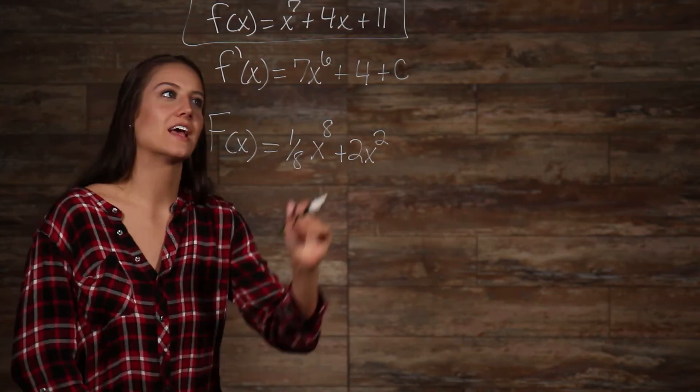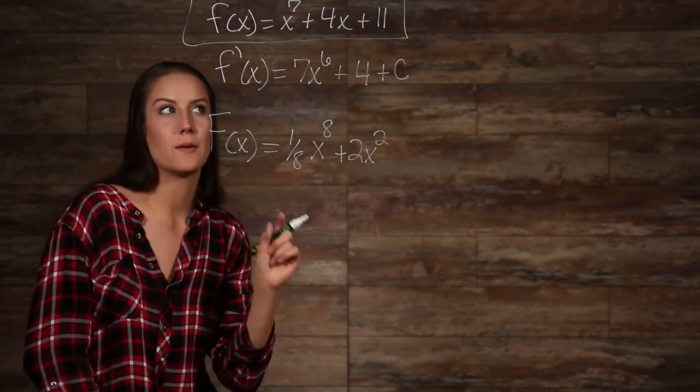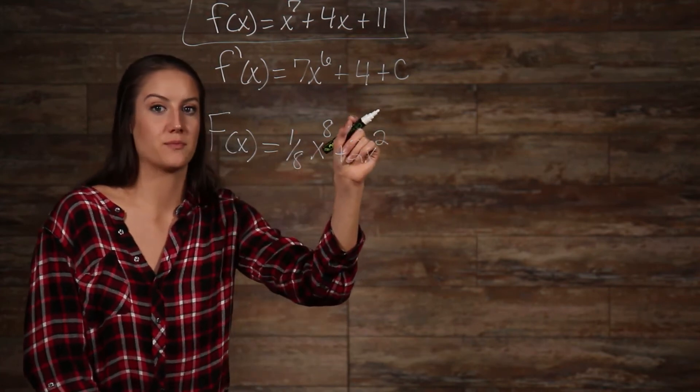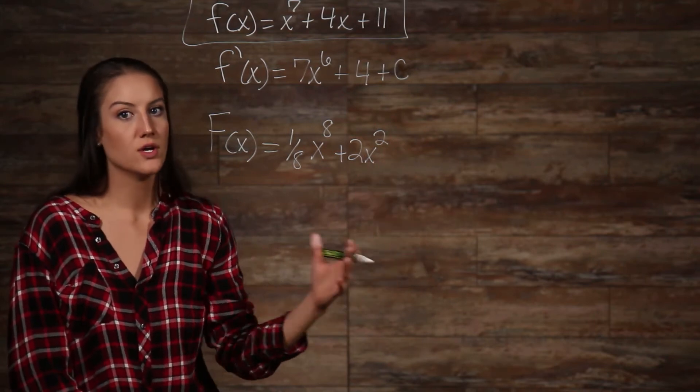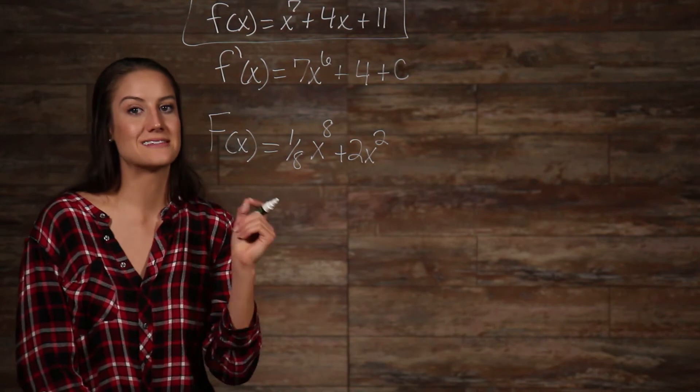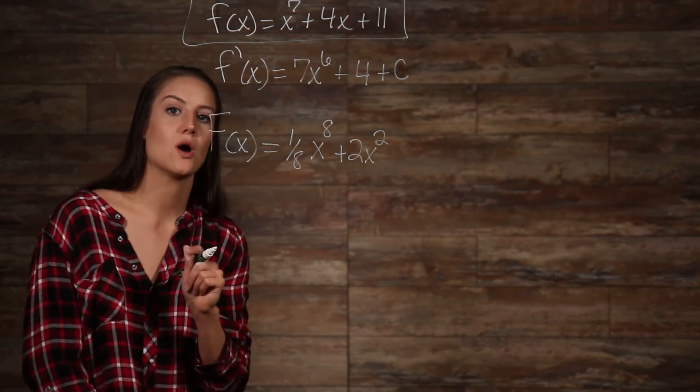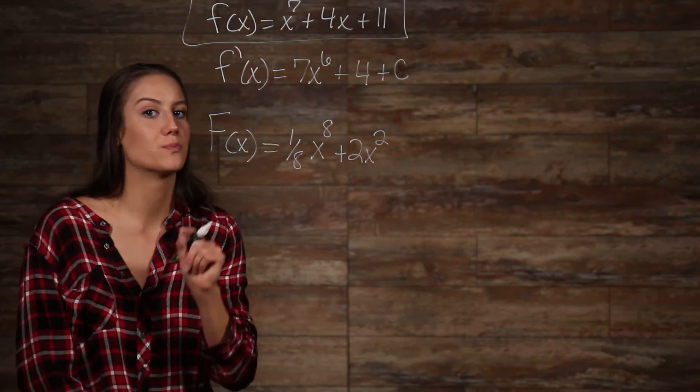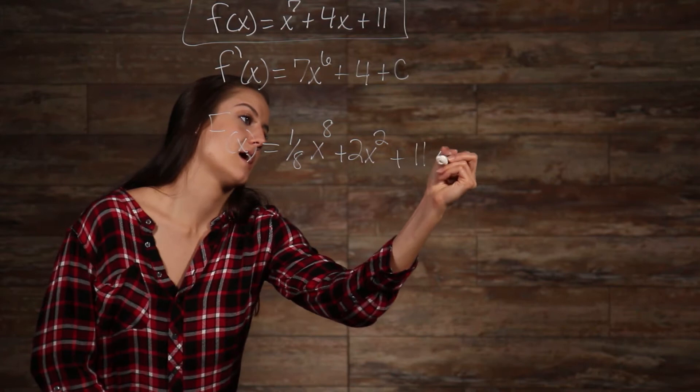We're almost done with this one. It looks like our last term here dropped a variable in the derivative process. And we know that there had to have been a variable, because if not, it would just have been a constant, and the derivative of a constant is zero. So, one was subtracted, which obviously left us with a zero in the exponent, because anything to the power of zero is one. So, let's add that one back, which means that we just bring back the x. So, that gives us 11x.